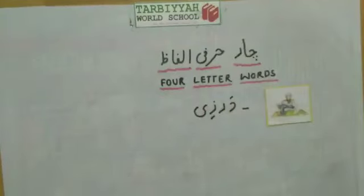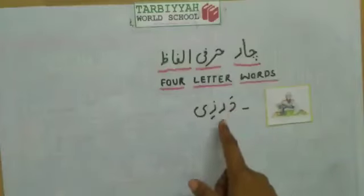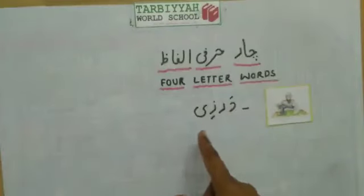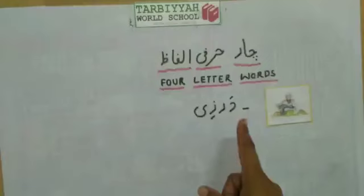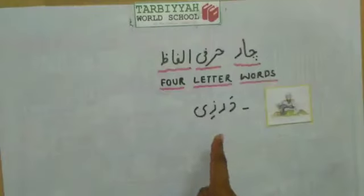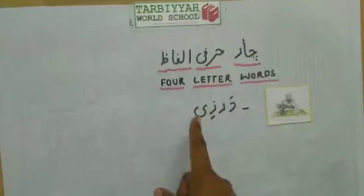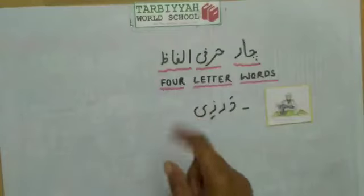Aap yahan dekh rahe hain — koi bhi harfi aapas mein join nahin ho raha hai. To yeh kaun se huruf hain? Yeh khaday huruf hain — Daal, Re, Zay, Yeh — sab khaday huruf hain. Inki end form mein kisi bhi letter se join nahin hotay. Aur yeh bhi iski last form hai, isko bhi hum alag likheinge. So we have to write like this.